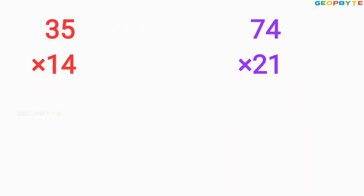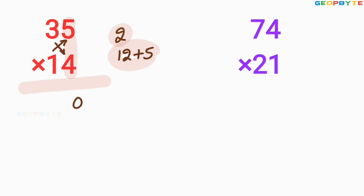Similarly, look at the next number: 35 multiplied by 14. First, multiply 5 and 4: 5 multiplied by 4 is 20. Write 0 here, 2 is balance. Then cross multiplication: 3 into 4 is 12, plus 5 into 1 is 5, equals 17, plus 2 balance is 19. Write 9 here, 1 balance. Then multiply 3 and 1: 3 into 1 is 3, plus 1 balance equals 4. Therefore, 490 is the value of 35 multiplied by 14.